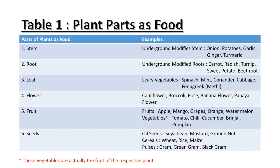The third part is leaf. Green leafy vegetables are a rich source of iron and are commonly available during winter months. For example, spinach, mint, coriander, cabbage, and fenugreek, which is commonly known as methi.